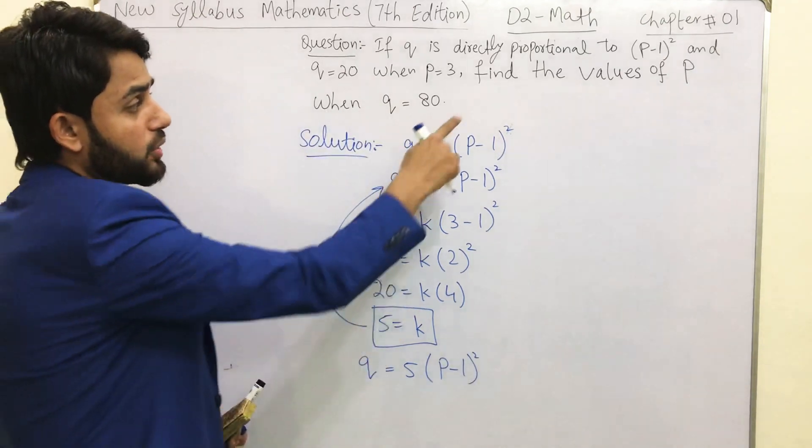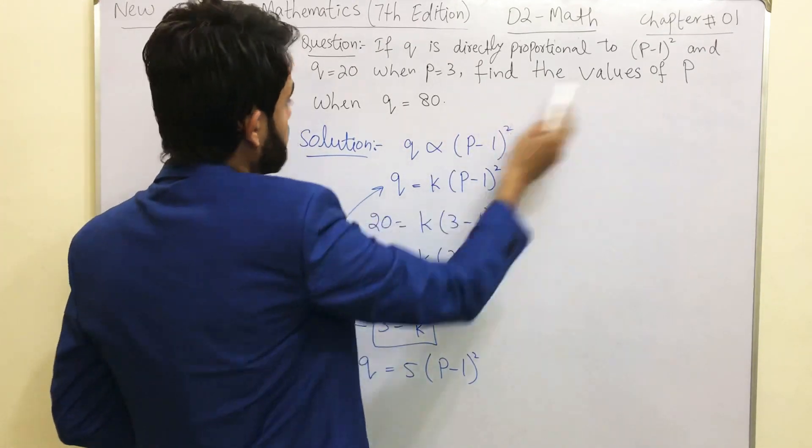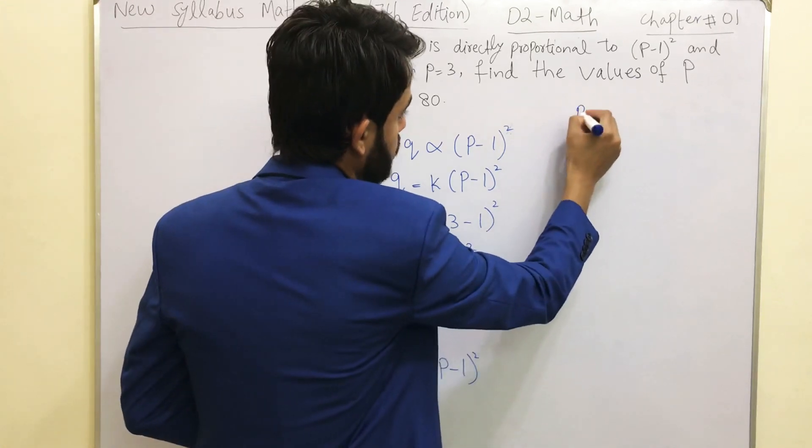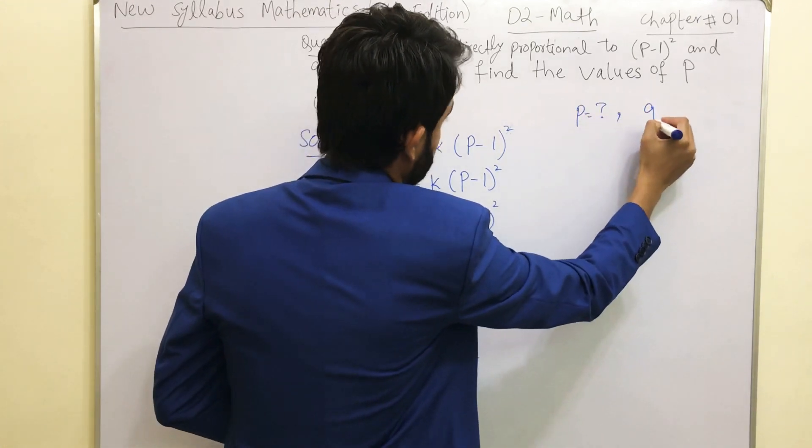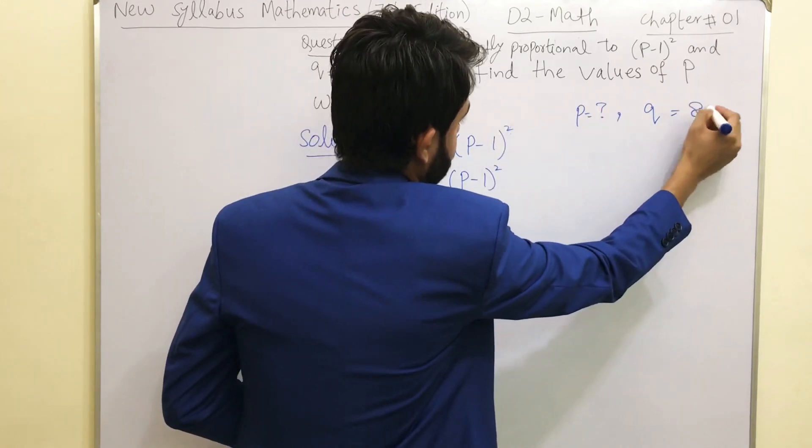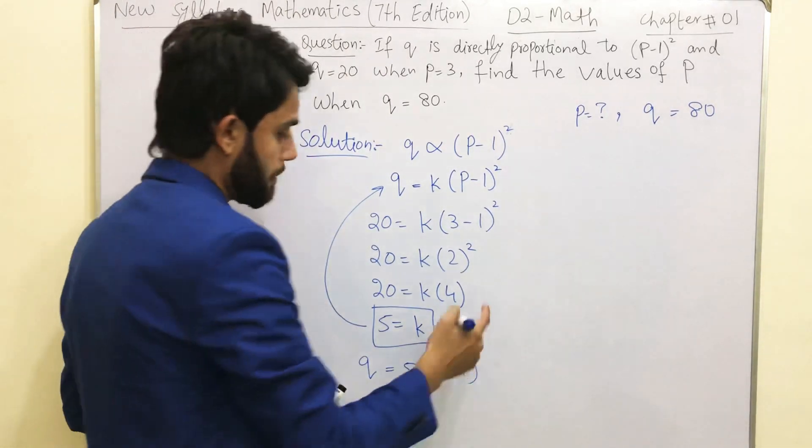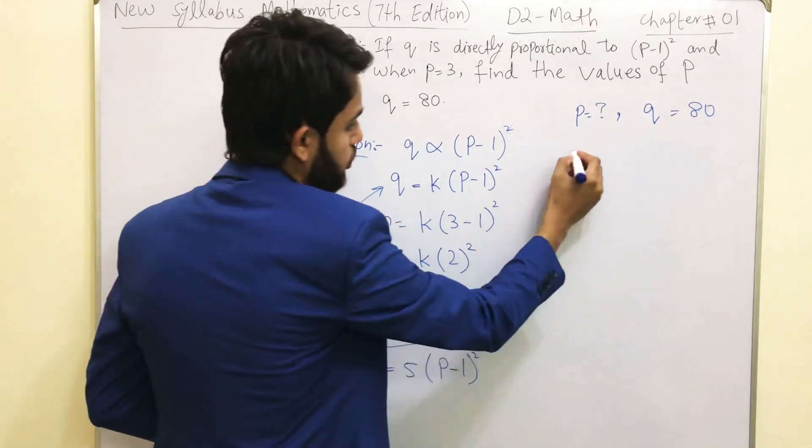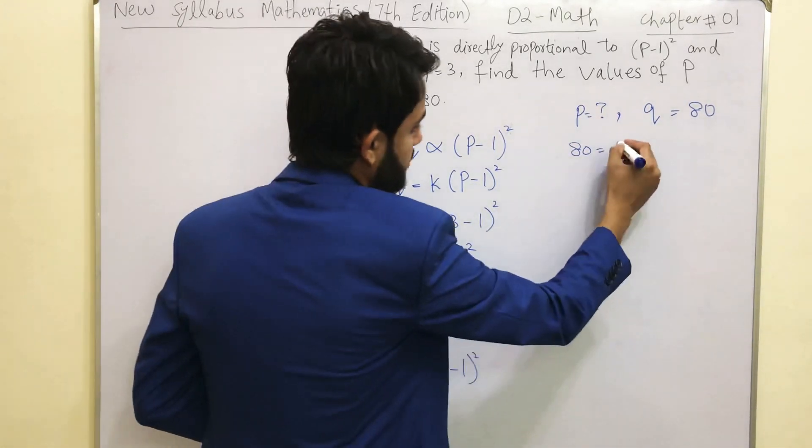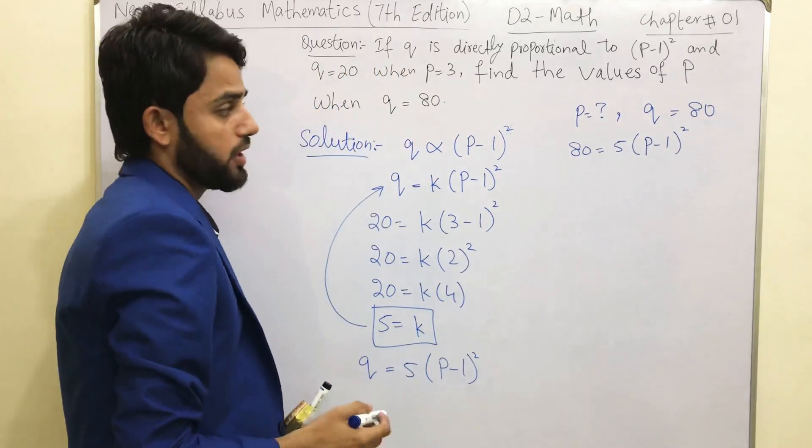Now we are going to the second part of this question. This part says find the values of P when Q equals to 80. So we have to plug in this value. Q is 80, so you will write 80 over here. 5 will remain the same. P we don't know so that's why it's like this.